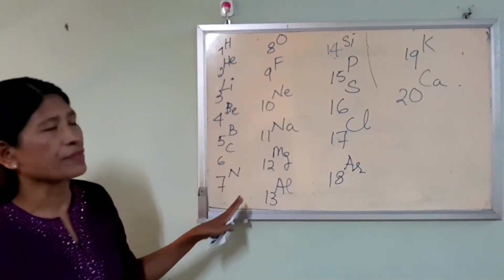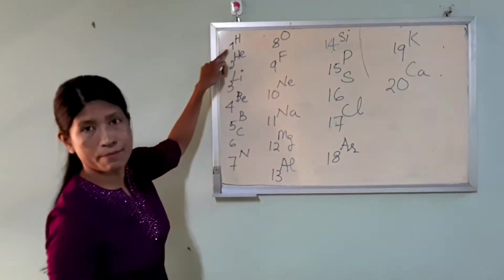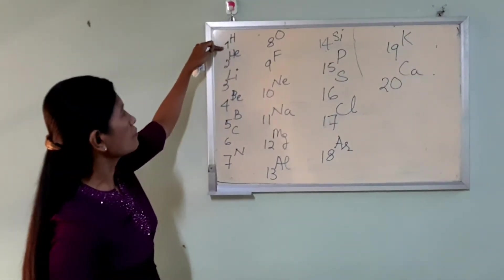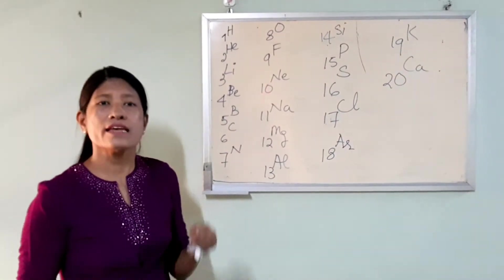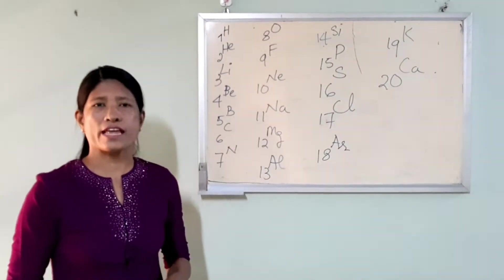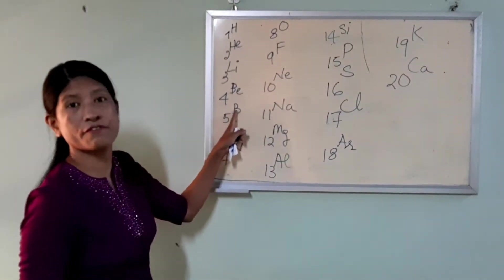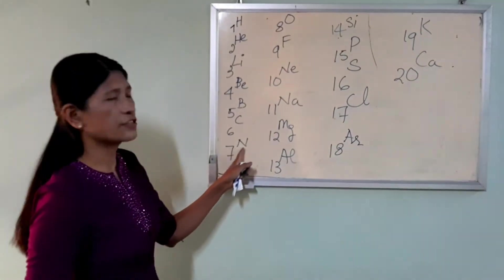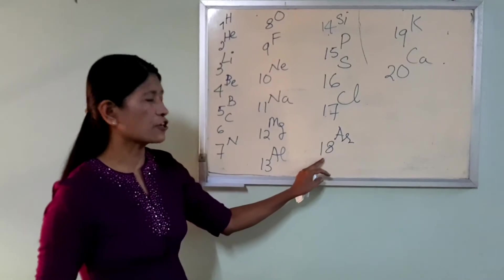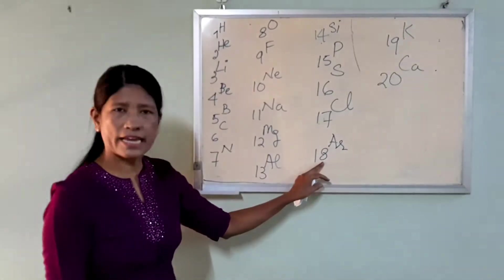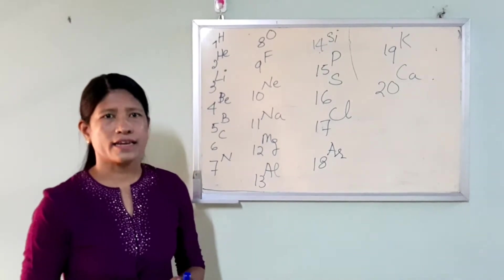If you want to use this, you can. The atomic number equals the number of protons equals the number of electrons. For example, 5B has 5 electrons. 7N has 7 electrons. Atomic number 18 means 18 protons and 18 electrons.